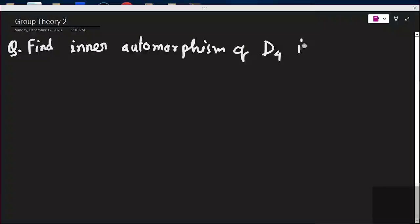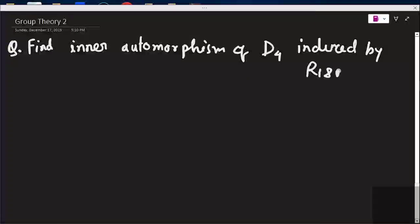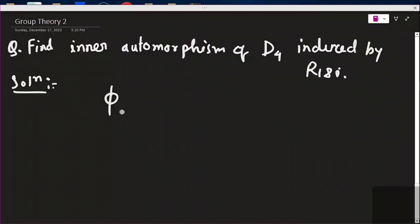We are finding the inner automorphism of D4 induced by r180°. First of all, what is an inner automorphism? An inner automorphism is an automorphism φ, denoted phi_a, where if phi_a is an automorphism induced by element a, then phi_a(x) = a·x·a⁻¹. This is an automorphism induced by an element, so it is called an inner automorphism.